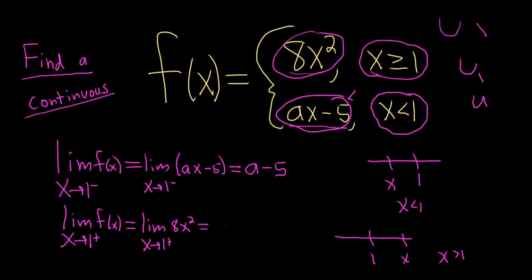We can evaluate this limit. So we plug in the number and drop the limit notation. So we get 8 times 1 squared, which is just 8.